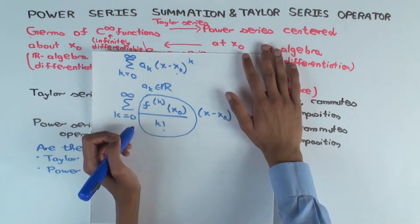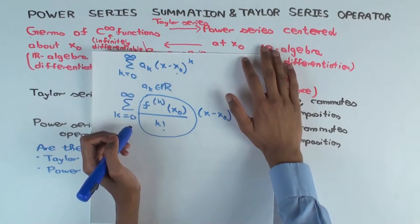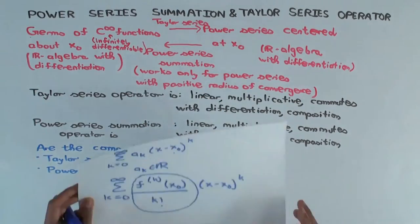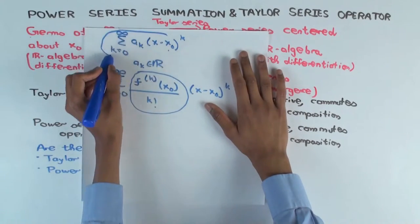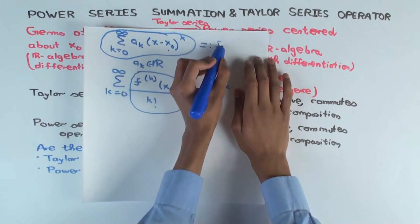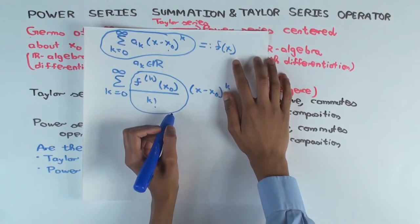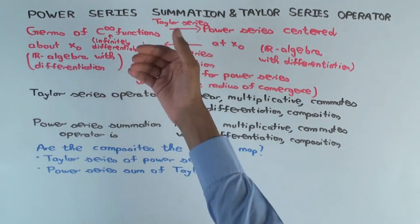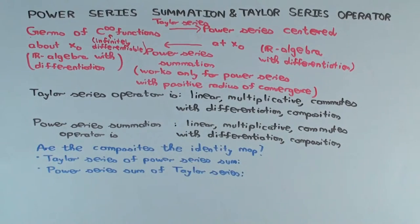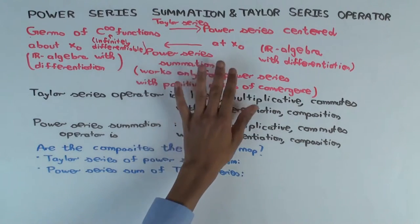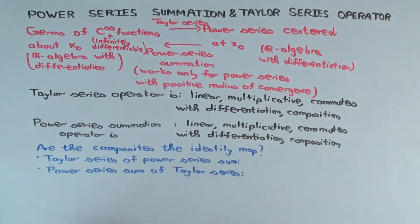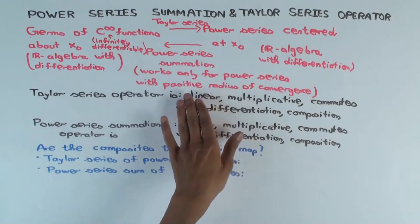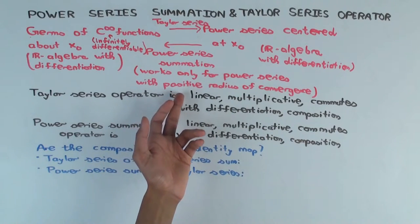If I start with a power series, how can I use that to get a function defined about x₀? Well, I just try to actually sum it up. However, the power series summation operator is not well defined on all power series — it's well defined only on those with a positive radius of convergence, because if the coefficients grow too fast, the series won't converge except at the center.